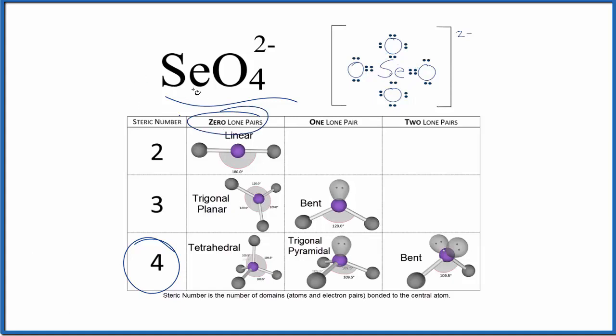That means the molecular geometry or molecular shape for SeO4^2- is tetrahedral, and the bond angle should be about 109.5 degrees.